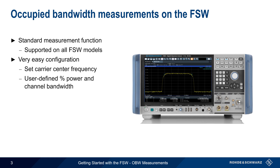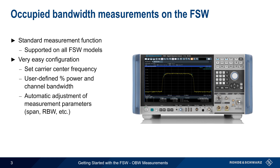Based on these parameters, the FSW can automatically adjust measurement parameters such as span, resolution bandwidth, etc. The measurement also supports search limits for performing occupied bandwidth measurements when multiple signals are present. And finally, the results are displayed in both graphical and numerical format.